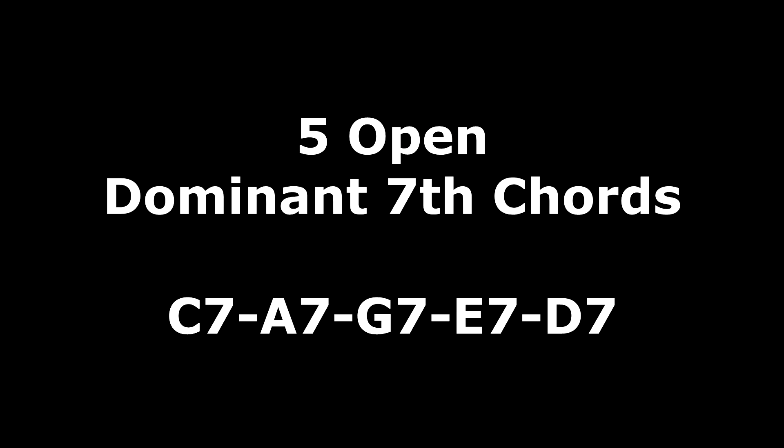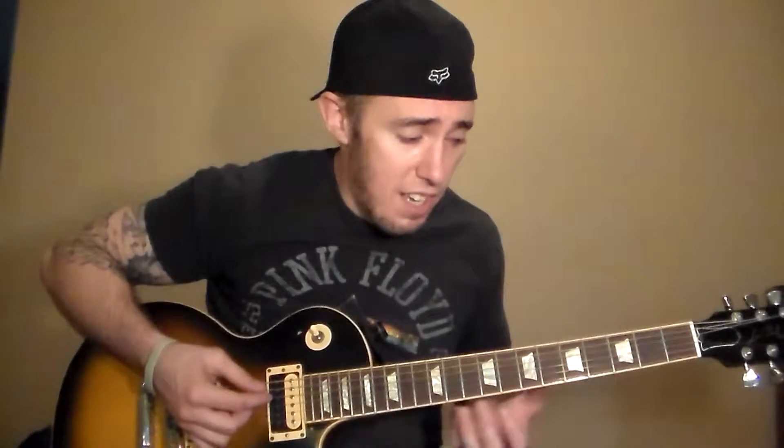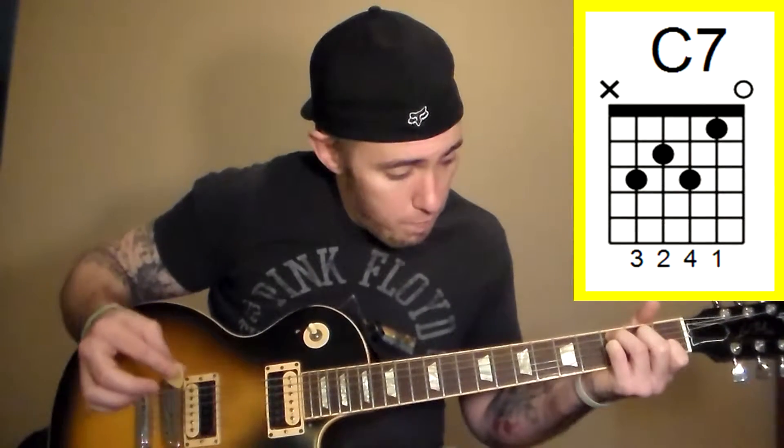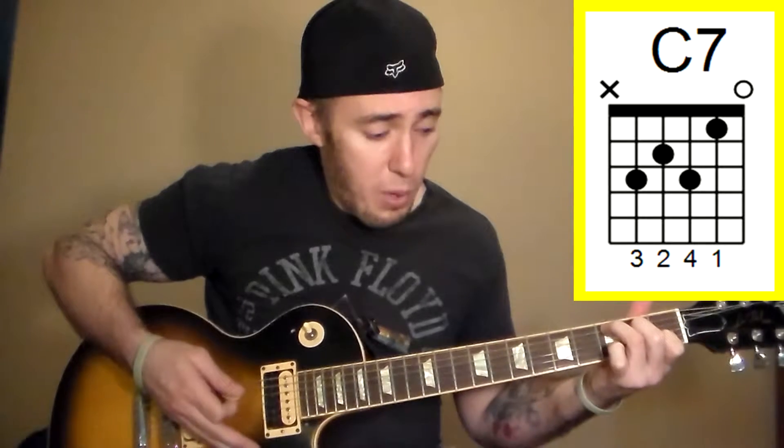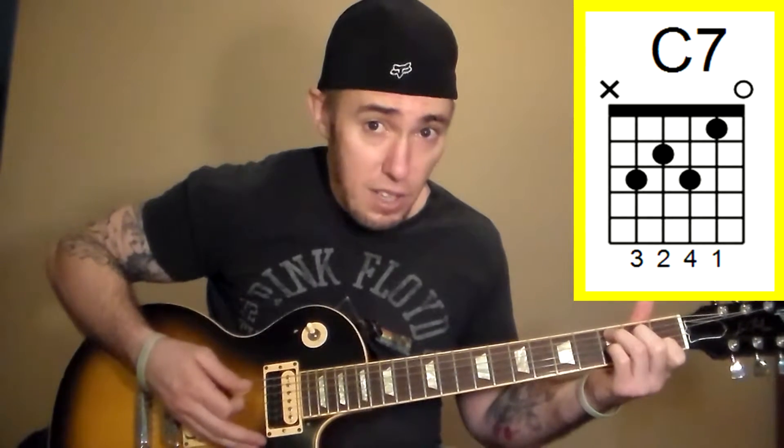Now for the dominant seventh chords. The five most commonly used open position dominant seventh chords are, again, they spell CAGED: C, A, G, E, D. So we're just going to use the open chord I showed you in the first part of the major chords, but now we're going to add the dominant seventh in there. So your C7 chord is going to look like this — which is basically just a C chord, but you're putting your pinky down on the third fret of the G string, as shown in the diagram.